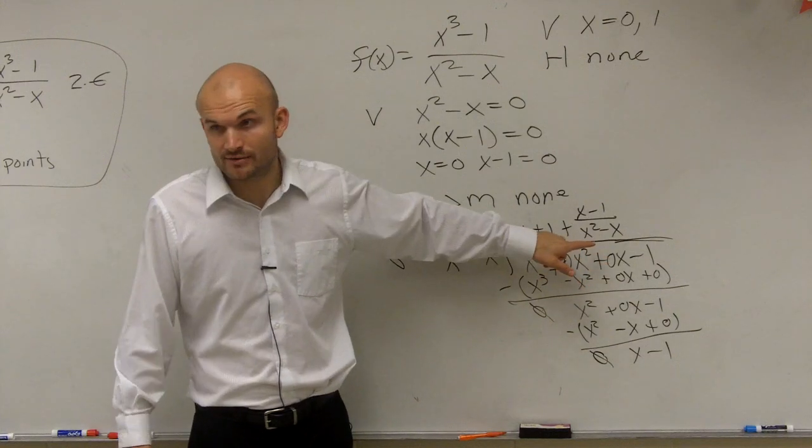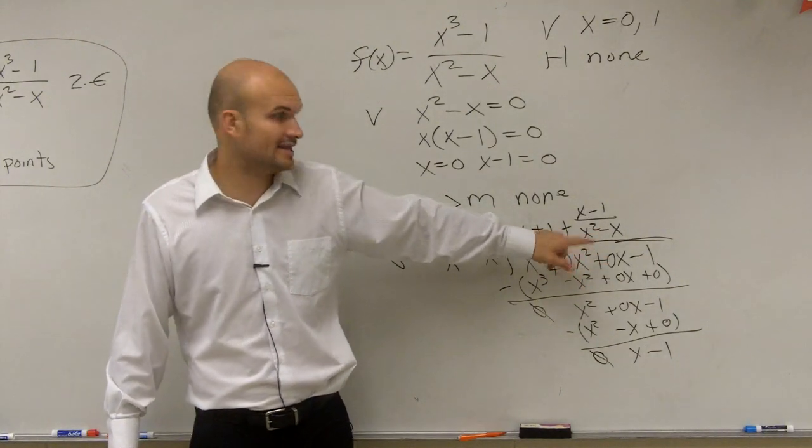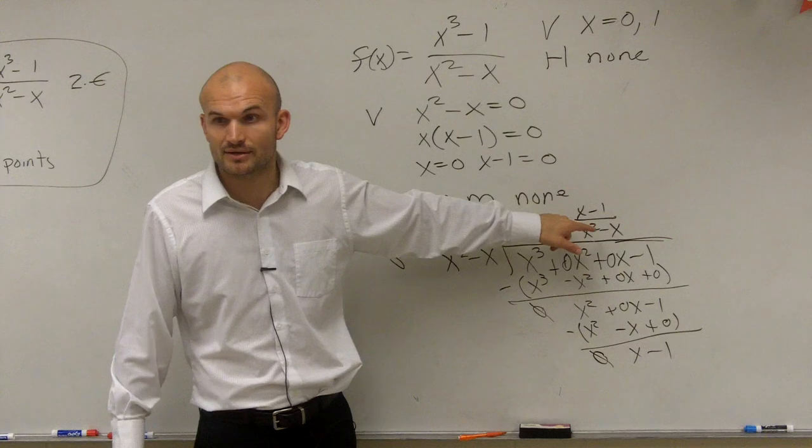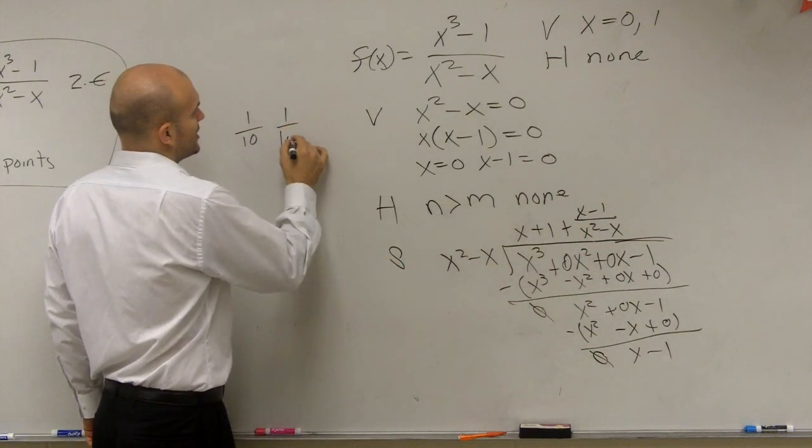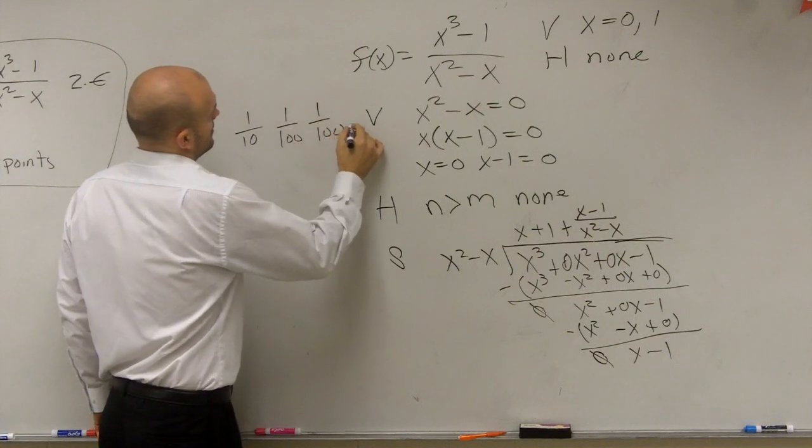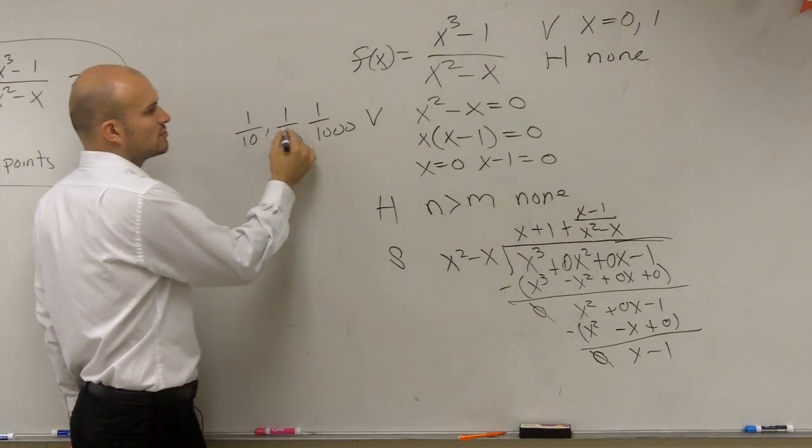Because you're always going to be squaring, right? So this is going to get bigger, much faster than that's going to get bigger. So as you have a denominator that keeps on getting bigger and bigger, what does this whole number approach?